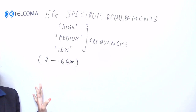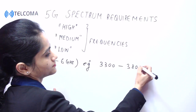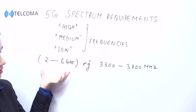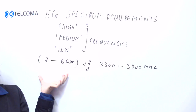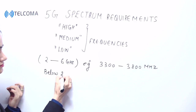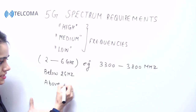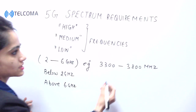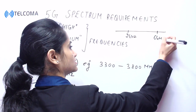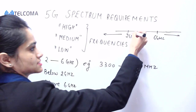Frequencies between 2 to 6 gigahertz — for example, we have a band of 3300 to 3800 megahertz. This is the medium frequency range. We can use these frequencies in combination with frequencies below 2 gigahertz and frequencies above 6 gigahertz. High frequencies are above 6 gigahertz, low frequencies are below 2 gigahertz, and medium frequencies fall in between.